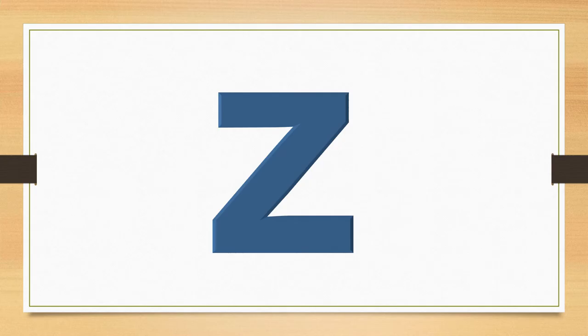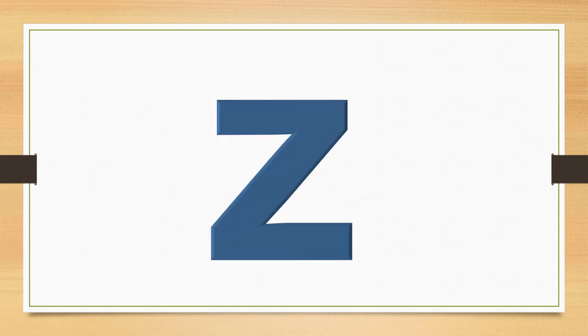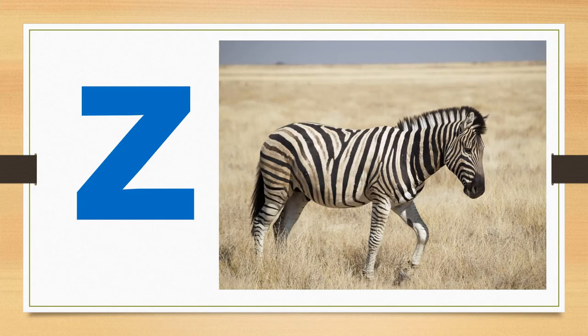This is the lowercase letter Z. The letter Z says Z. Z says Z. The word zebra starts with the sound Z. Z. Zebra. Z. What sound does the letter Z make? The letter Z says Z. Z says Z.